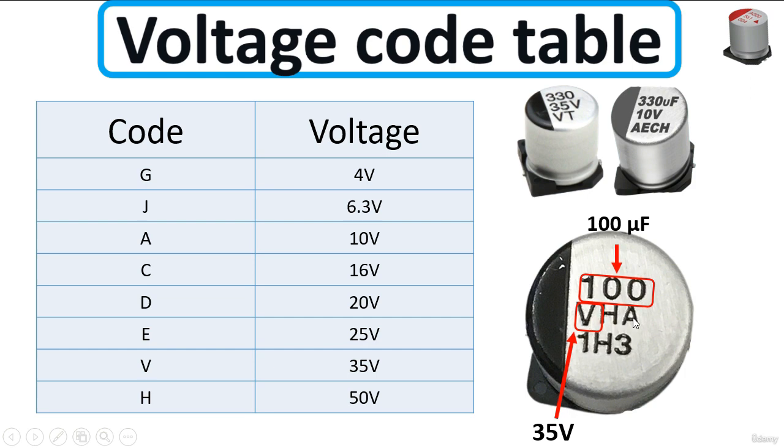So here based on this letter, always the first letter here means the voltage. So we have here V, we should use the code table. So let's look for the letter V. We have here V means 35 volts.